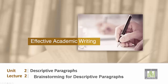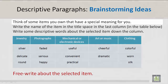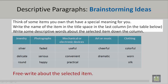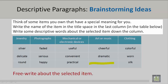Descriptive Paragraphs. Brainstorming Ideas. Think of some items you own that have a special meaning for you. Write the name of the item in the title space in the last column in the table below. Write some descriptive words about the selected item down the column.